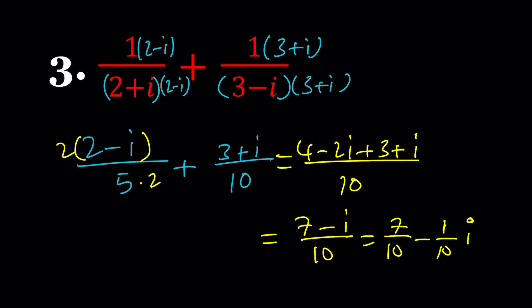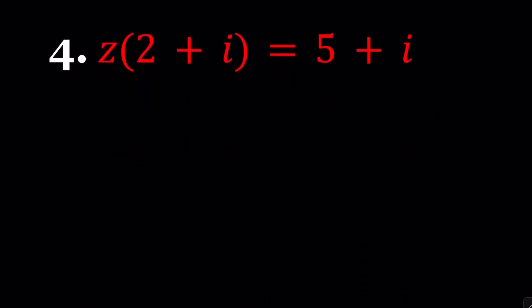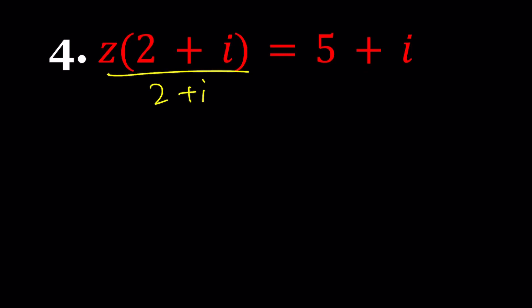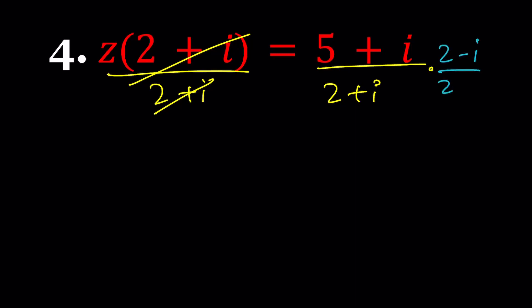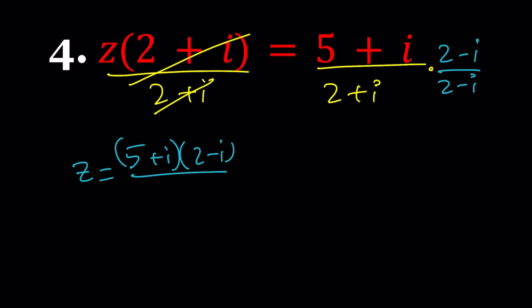Let's take a look at number 4. We can talk about two different methods: distribute z, or replace z with a plus bi and solve for a and b. But there's an easier way — dividing both sides by 2 plus i. To divide two complex numbers, you use conjugates. Let's multiply by 2 minus i on both top and bottom. At the bottom, from the sum of two squares, we get 4 plus 1, which is 5.